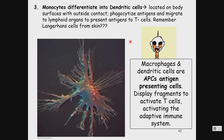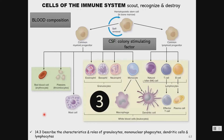Dendritic cells are professional antigen-presenting cells. Think of it like this: when you vanquish a foe, you cut off their head and show it to everybody else. Macrophages, dendritic cells, and B-cells can present a piece of a foreign invader and then activate the adaptive immune system. They present antigens to T-cells. These dendritic cells specifically eat things and then go activate the immune system. Our big eaters are the neutrophils, the macrophages, and the dendritic cells.